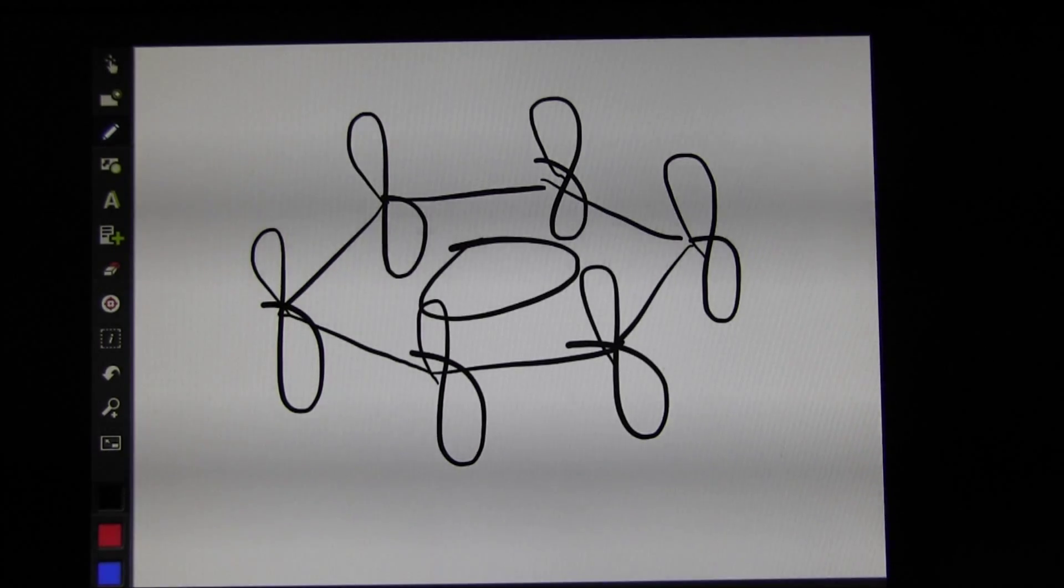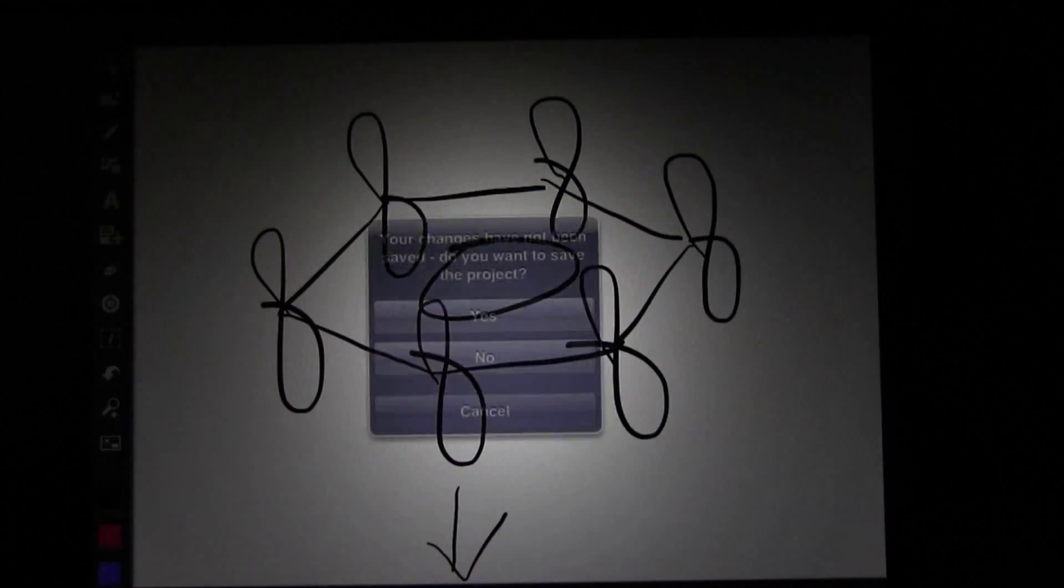The other interesting thing is you can actually record all of the things that you do on these pages in Explain Everything. Because there is a small red button here if you look at it. If you actually select that, it will record everything. We can just look at one more slide or we can create a new document. Let's go and save this.